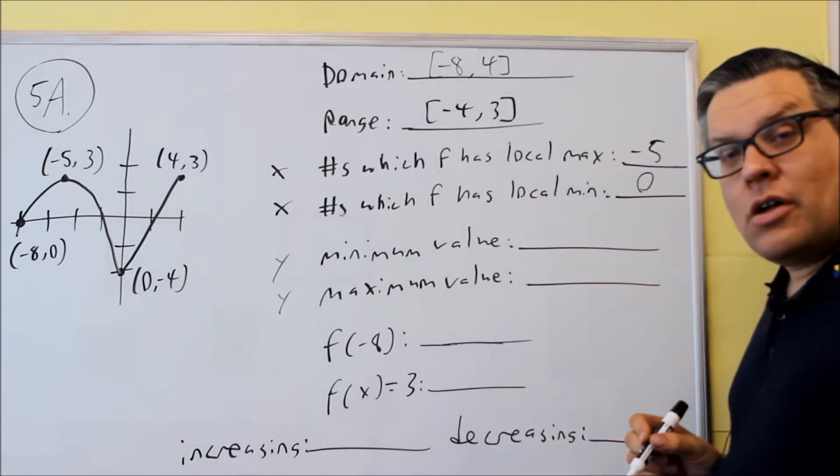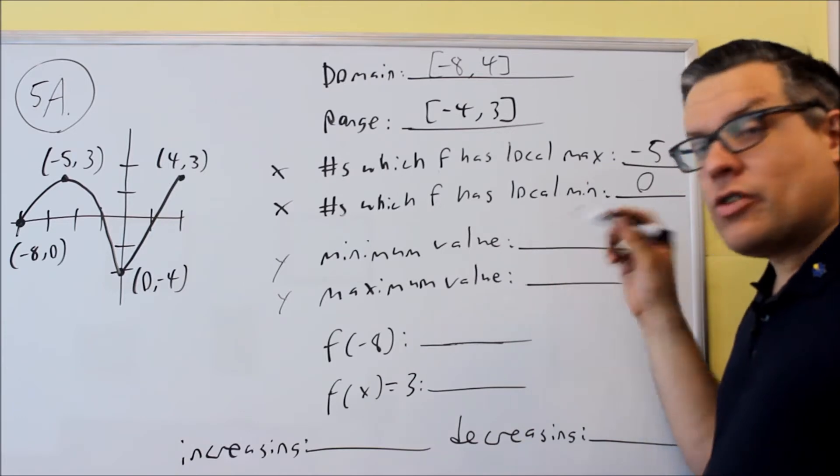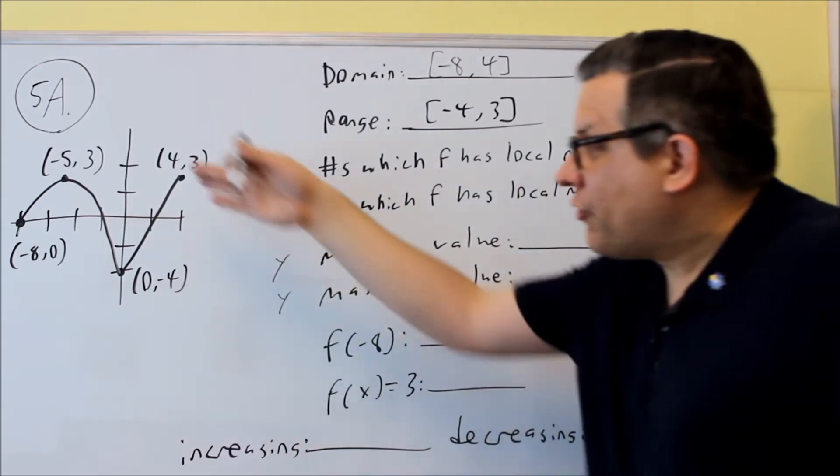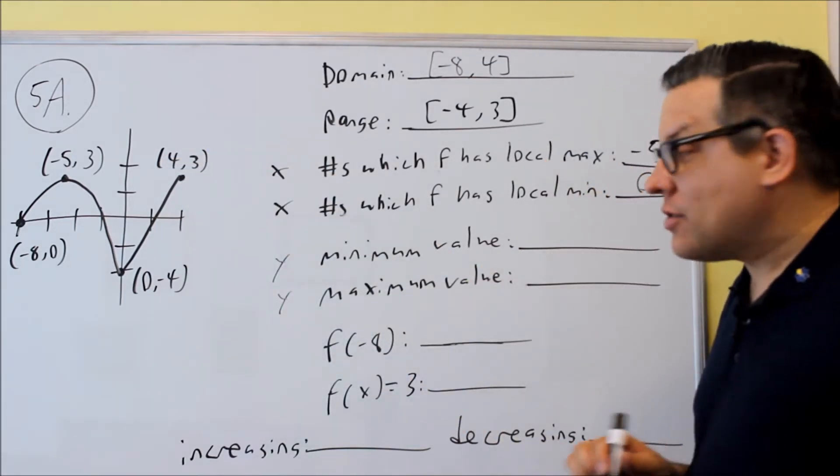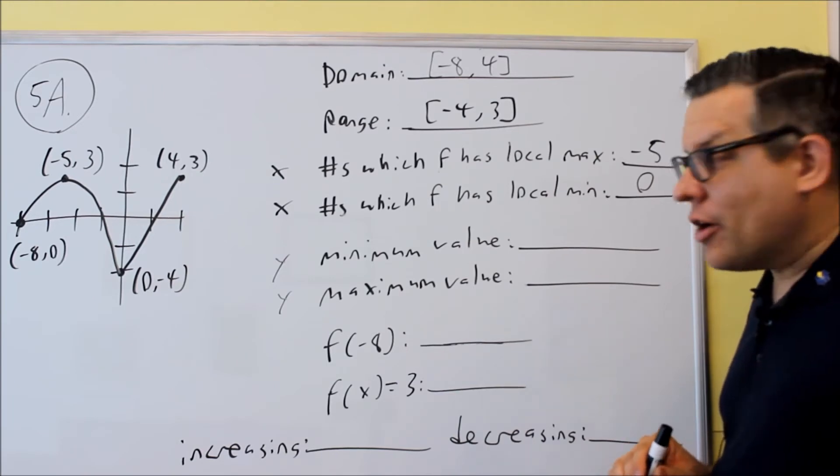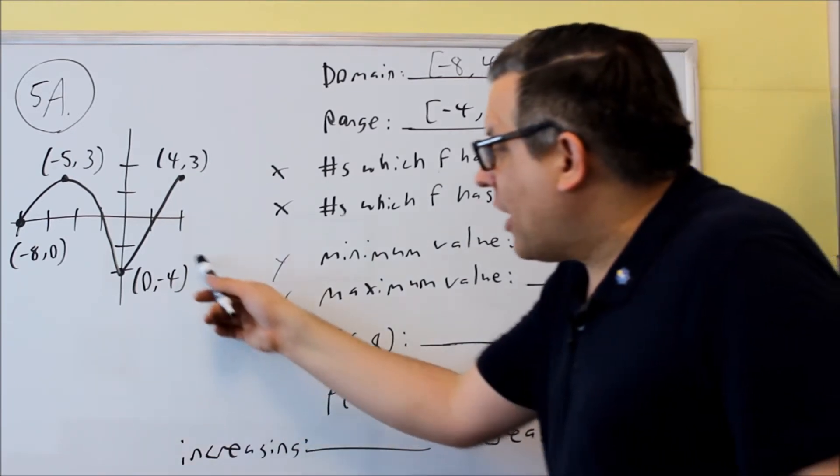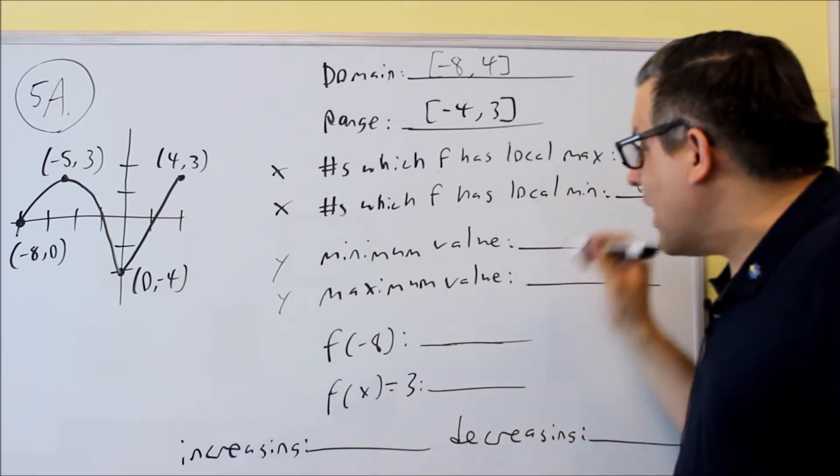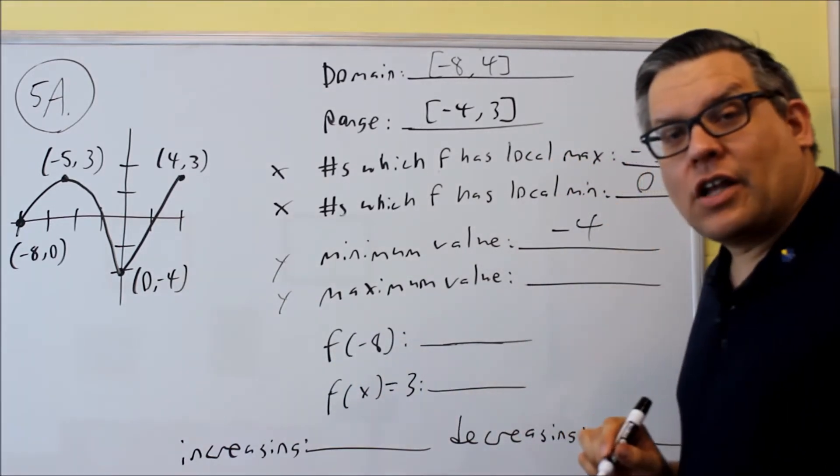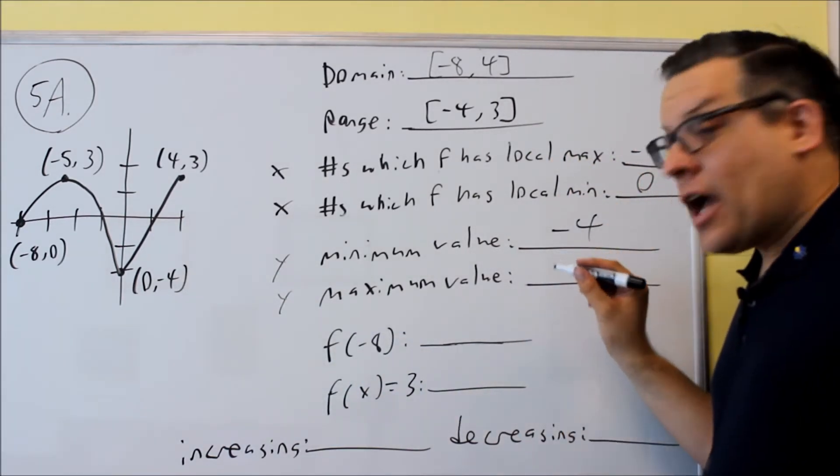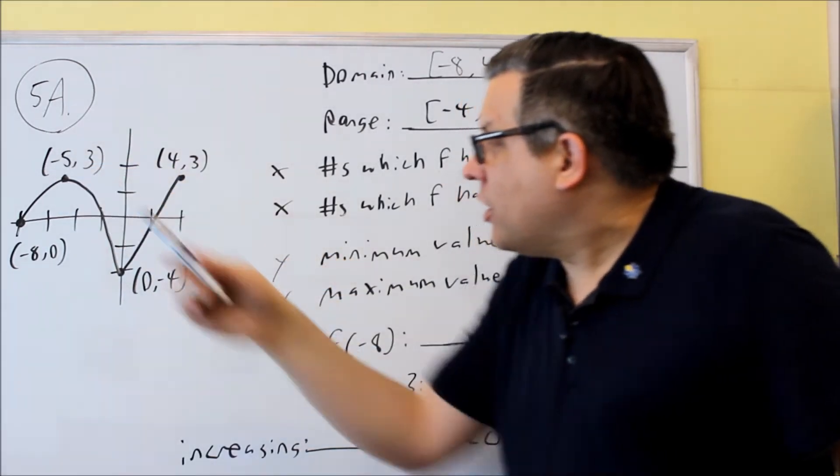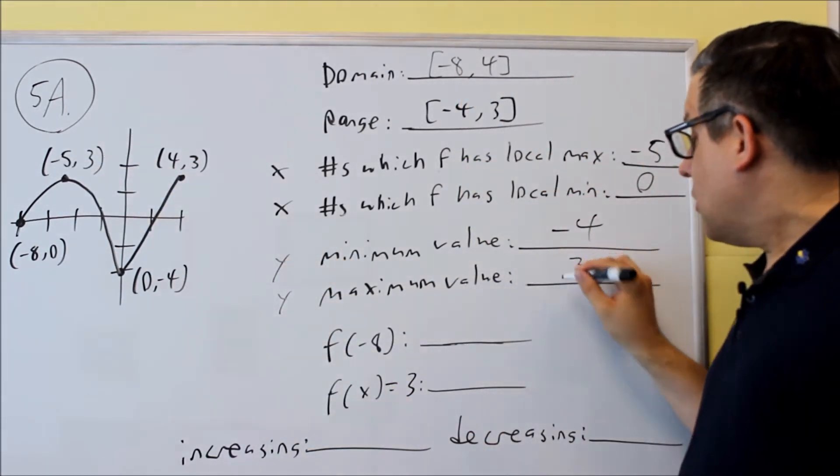Now these, you're talking about the min and max value. They're talking about y values. We're still referring to the same point on the graph, but we want to indicate the y value there. So the minimum value is this one here. Look at the y value. That's negative 4 at that point. Maximum value is going to occur at this point here, and that's going to be 3.